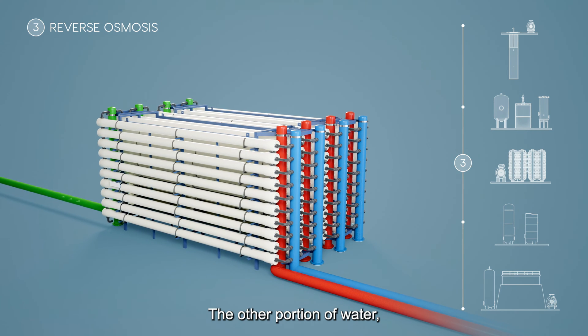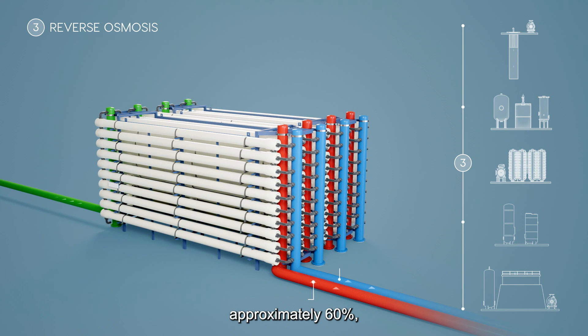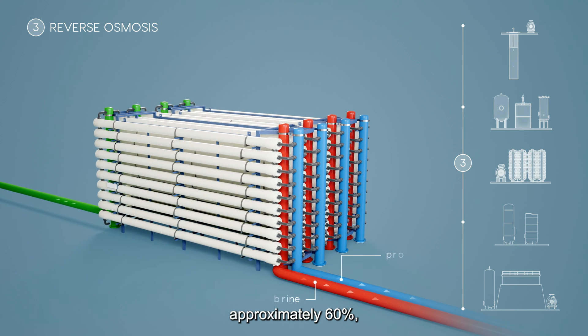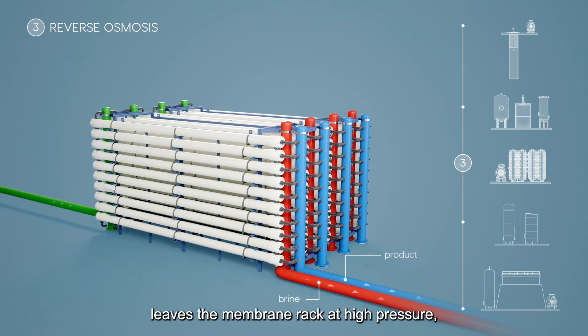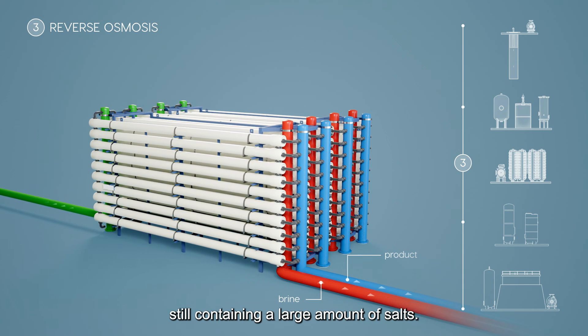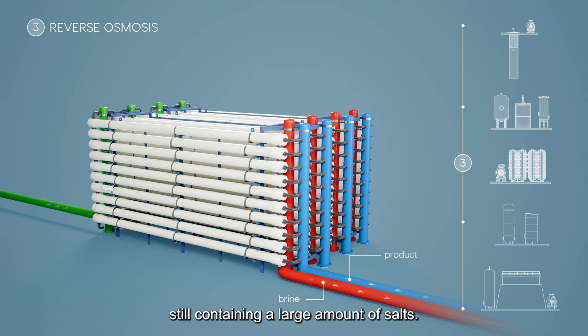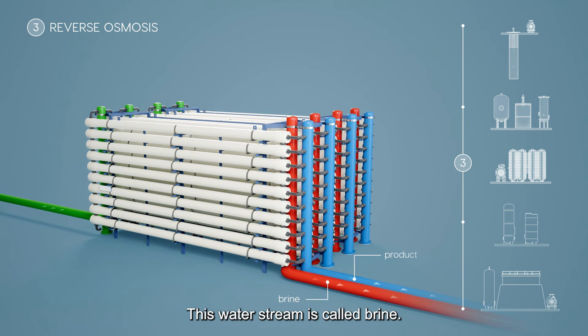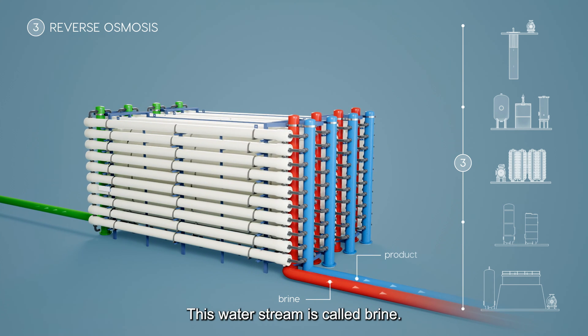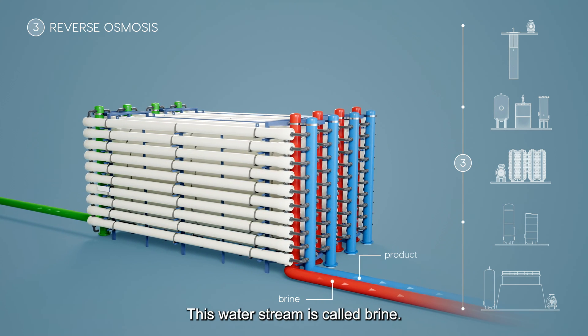The other portion of water, approximately 60 percent, leaves the membrane rack at high pressure, still containing a large amount of salts. This water stream is called brine.